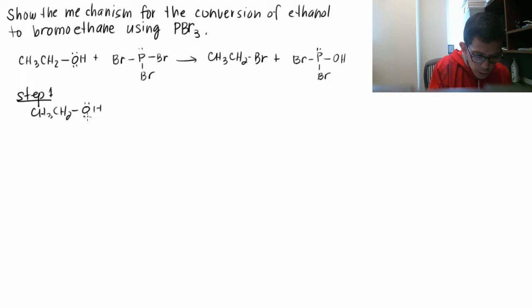CH3CH2OH and you have PBr3. I'm going to spell out the lone pairs on that third bromine on your PBr3. So the first step is one of the lone pairs on the oxygen attacks the phosphorous on PBr3.